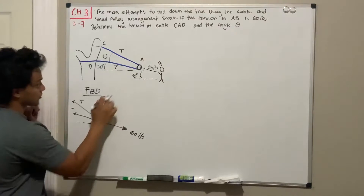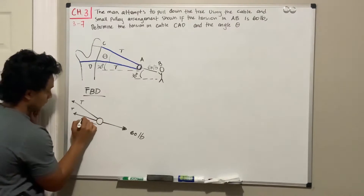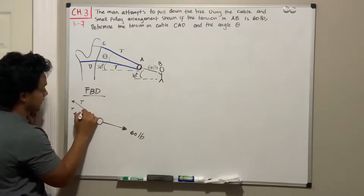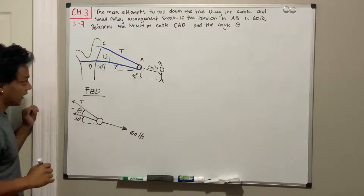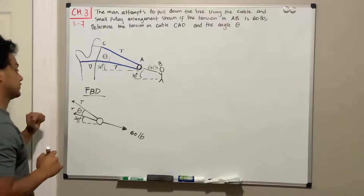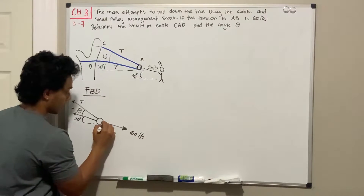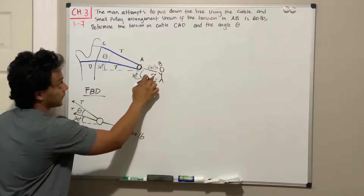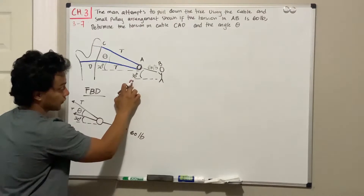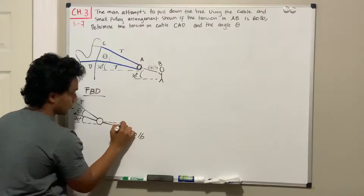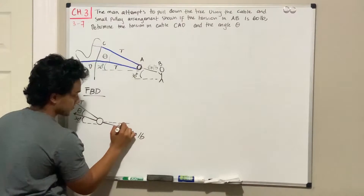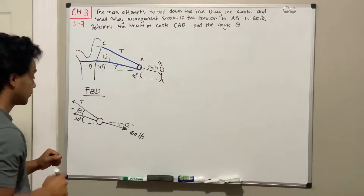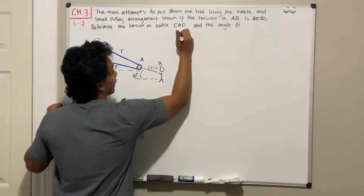We're told that the first tension has an angle of 20 degrees with respect to the x-axis, and between the cables we have an angle theta — that's the one we want to find. We're also told that the man is applying his force at 30 degrees with respect to the x-axis, which we represent in the diagram as 30 degrees.